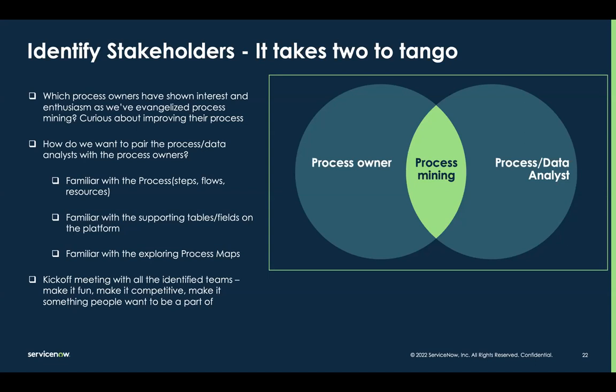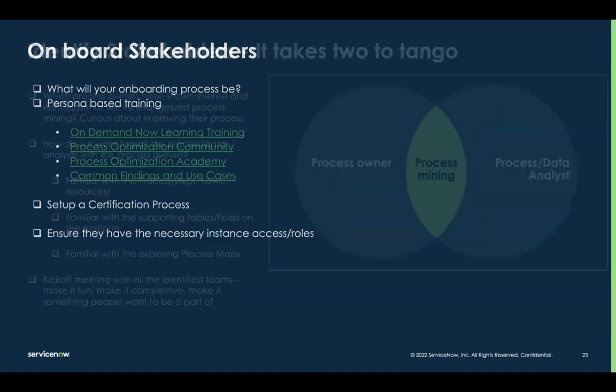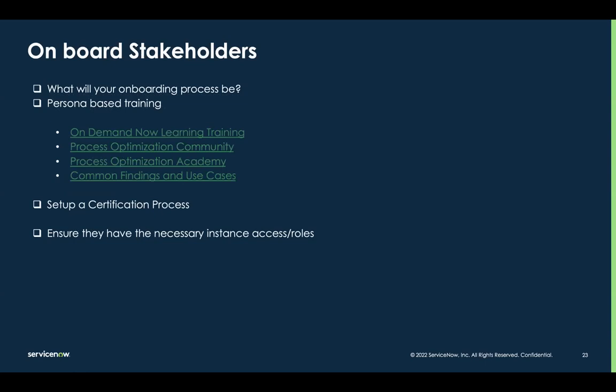Once you identify the process and stakeholders, have a kickoff meeting — try to make it fun, competitive, something exclusive that people want to be a part of. As you involve more stakeholders, consider some form of onboarding process to make sure all stakeholders have the correct level of knowledge for their specific role. Think about setting up persona-based training — an executive track, a process owner track, an analyst track. These don't have to be extensive; they could be 5-, 10-, 15-, or 30-minute videos posted on a SharePoint site or knowledge base. Maybe you use the on-demand learning course or some of these academy sessions as resources to educate people internally.